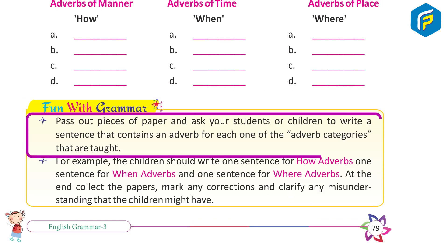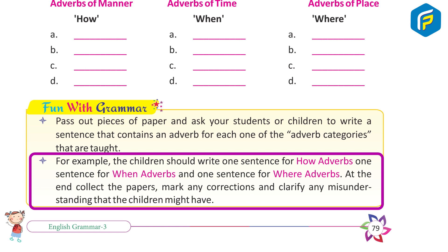Fun with Grammar. Pass out pieces of paper and ask your students or children to write a sentence that contains an adverb for each of the adverb categories taught — one sentence for how adverbs, one sentence for when adverbs, and one sentence for where adverbs. At the end, collect the papers, mark any corrections, and clarify any misunderstandings that the children might have.